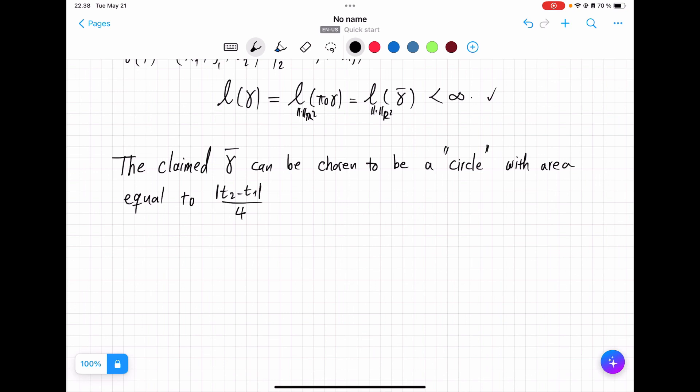T2 minus T1 divided by 4, but T2 minus T1 can be negative so I take absolute value so the area, the absolute value of the area, should be equal to this positive value and then